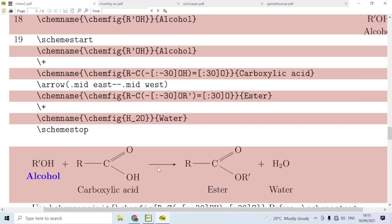Another case is for this arrow, we can adopt two different strategies. In the first case we may use dollar longrightarrow dollar, but even then the length may not be so much. To get proper size of the arrow, we can use this command \arrow, and it starts from mid east of carboxylic acid. For carboxylic acid, mid east is here, and it goes up to mid west of the ester, up to this point. Therefore you have an arrow of proper size.